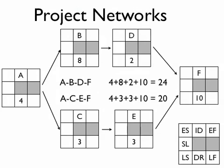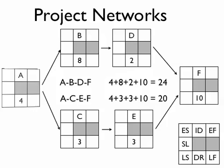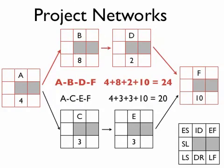Looking at our project network, we have two paths: A-B-D-F and A-C-E-F. Adding up the durations, the critical path is A-B-D-F, which adds up to 24 days. That means 24 days is the entire length of our project. We've now been able to determine the critical path. We'll stop here, and in the next video we'll look at how we derive the other time-related task properties.